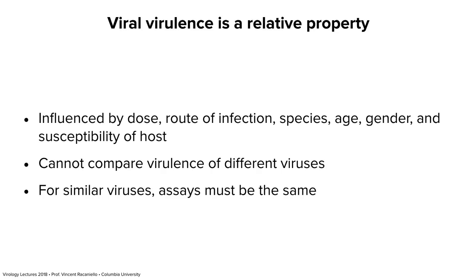The most important thing to understand about virulence is that it's a relative property — influenced by dose, route of infection, the animal used, age, gender, and general susceptibility of the host. You can't compare virulence of different assays at all. You can't compare different animals or different routes of inoculation. You can only compare the same virus assayed in exactly the same way.